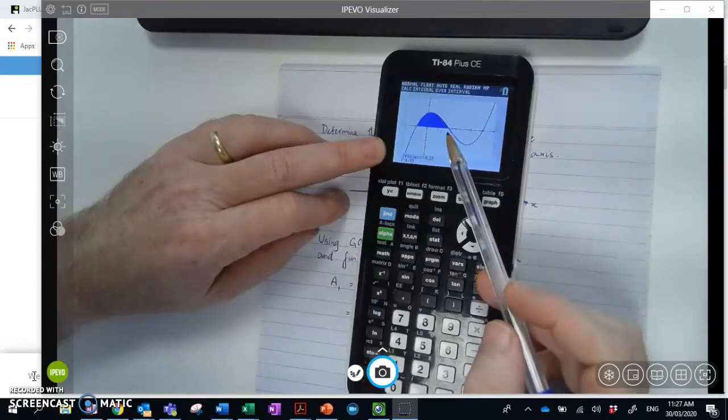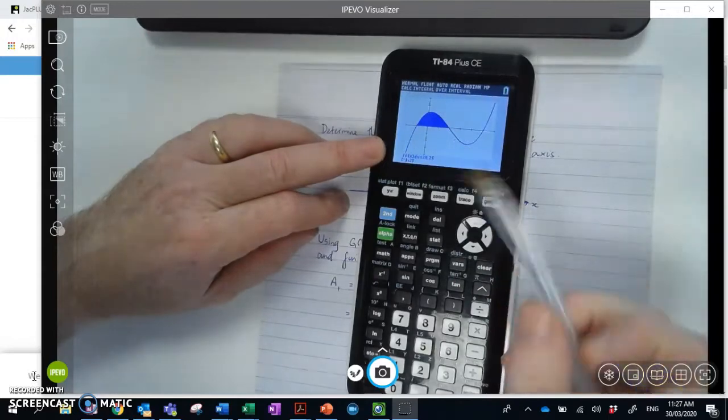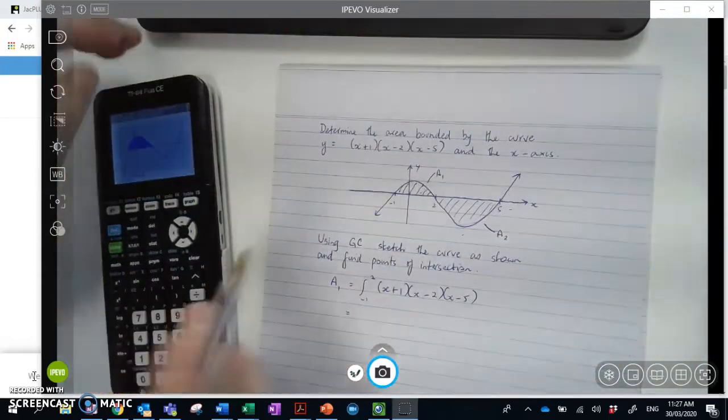And it'll actually sketch in there, you can actually visually see that you're getting the whole area, and down there it's actually listed as what it is. And this is 20.25.